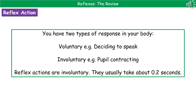An example of an involuntary response is the pupil contracting in your eye when you look at a bright light. When we're talking about reflex actions, they are involuntary responses, and because of that, they're not going through our brain — we're not actually contemplating what we're about to do before we do it. As a result, they're much faster; these ones take place in about 0.2 seconds.